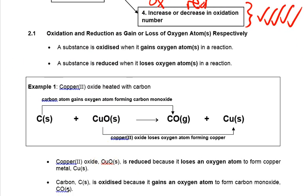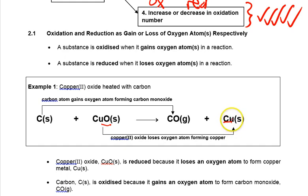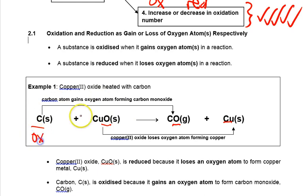Let's look at another equation: carbon and copper oxide reacting together. Copper oxide has lost oxygen to form copper, so copper oxide has been reduced. Carbon has gained oxygen to form carbon monoxide, so carbon has been oxidized. Together, there is an oxidation reaction and a reduction reaction, giving you a redox reaction overall.